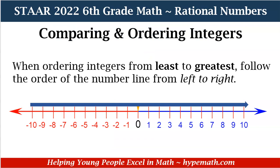So let's dive in and talk about comparing and ordering integers. When comparing and ordering integers from least to greatest — that means from the smallest number to the largest number — follow the order of the number line from left to right. You see our number line, and our arrow starts on the far left-hand side and we move to the right as we are ordering our integers. Let's look at an example.